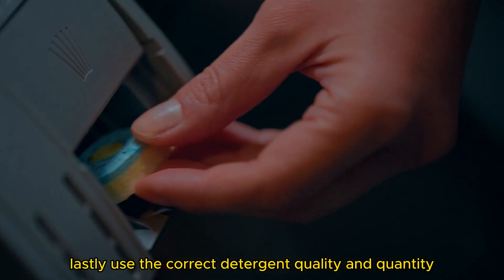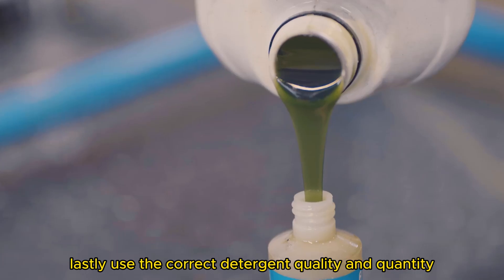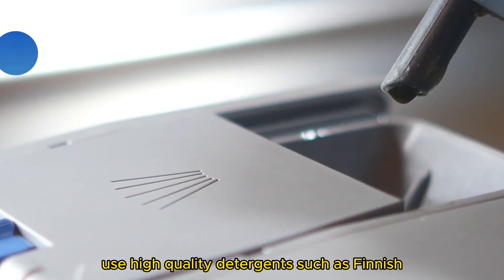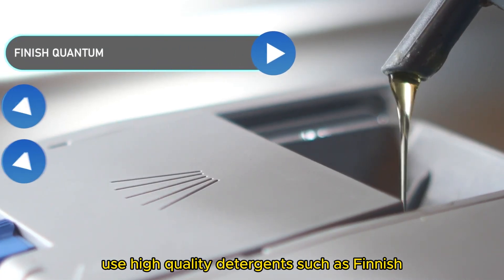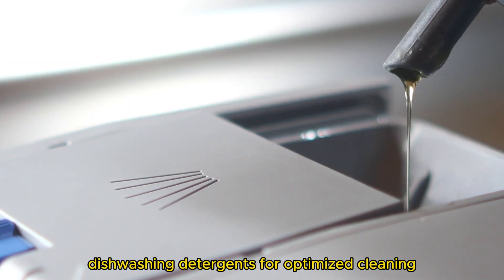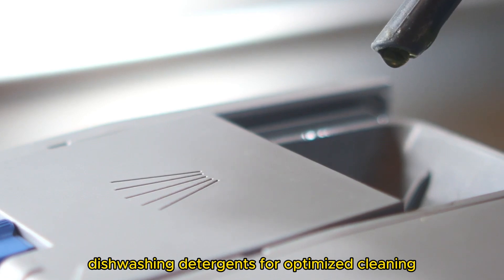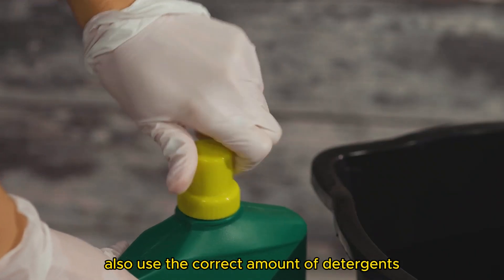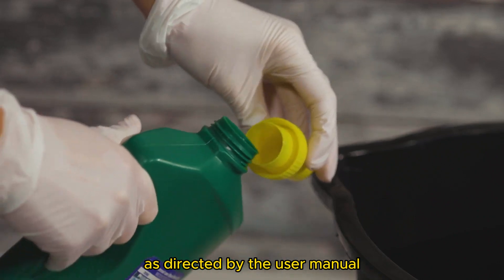Lastly, use the correct detergent quality and quantity. Use high-quality detergents such as Finish Quantum, Cascade Platinum, and ActionPak's dishwashing detergents for optimized cleaning. Also, use the correct amount of detergents as directed by the user manual.